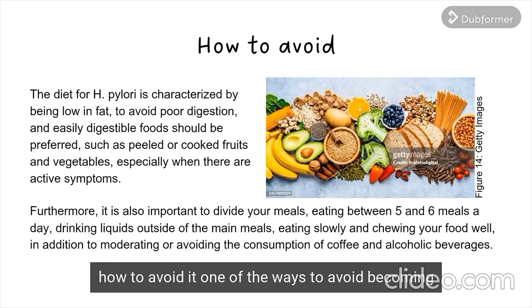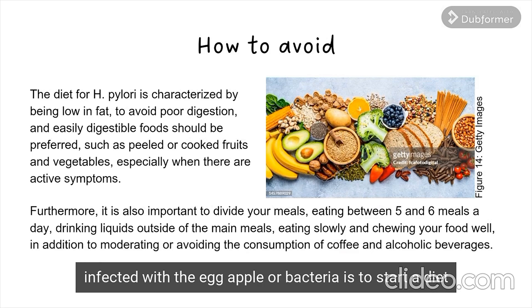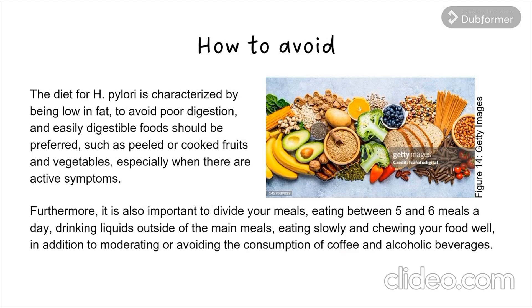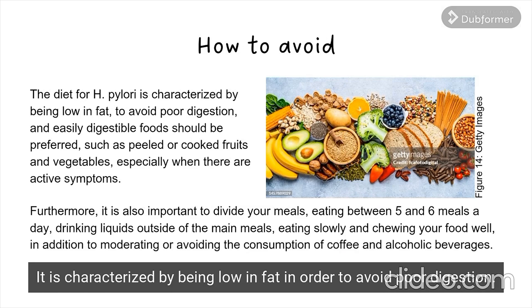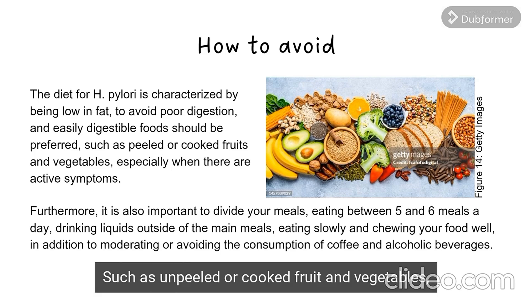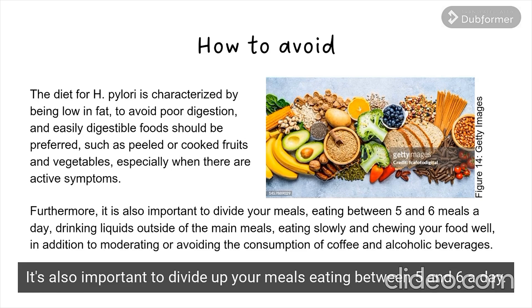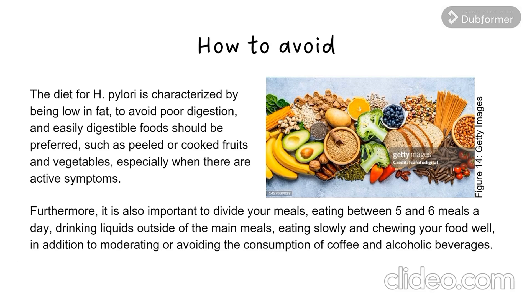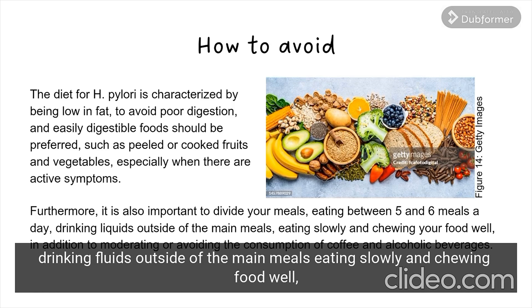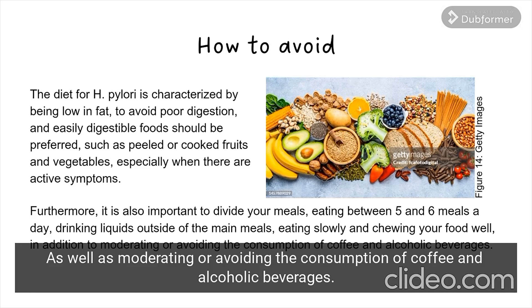How to avoid it. One of the ways to avoid becoming infected with the H. pylori bacteria is to follow a diet characterized by being low in fat in order to avoid poor digestion, such as eating unpeeled or cooked fruit and vegetables, especially when there are active symptoms. It's also important to divide up your meals, eating between five and six a day, drinking fluids outside of the main meals, eating slowly and chewing food well, as well as moderating or avoiding the consumption of coffee and alcoholic beverages.